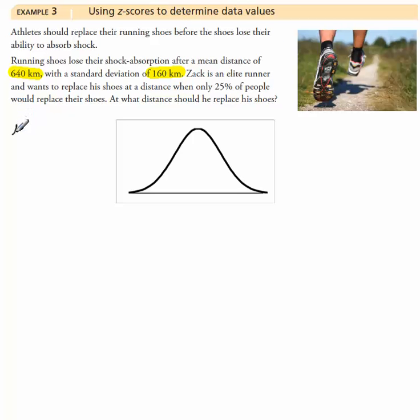So we're given the mu, mean, 640. We're given the standard deviation of 160 kilometers. We don't have x. We don't have the data value. And at this point right now, we don't have a z-score. But we can find it without having to do any calculations.